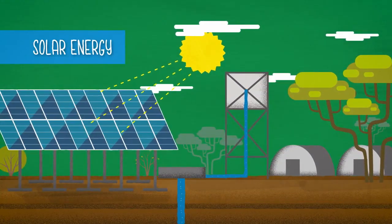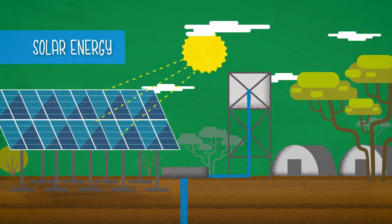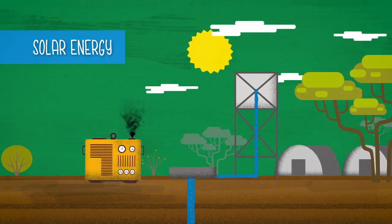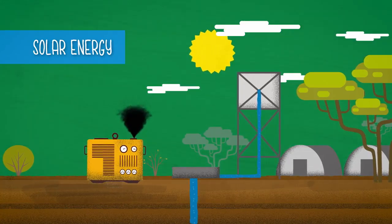Research has shown that for off-grid areas, solar energy is the cheapest and most reliable solution for pumping and supplying water. However, it is still not being widely adopted for humanitarian responses.